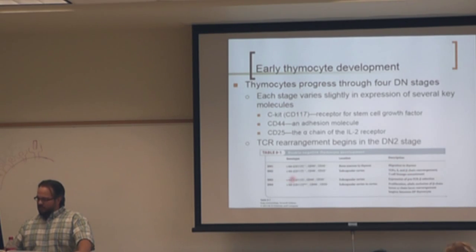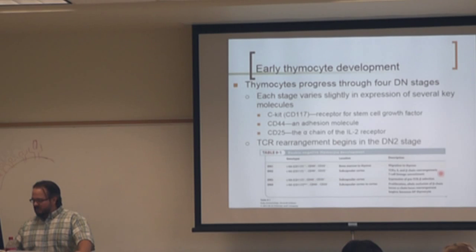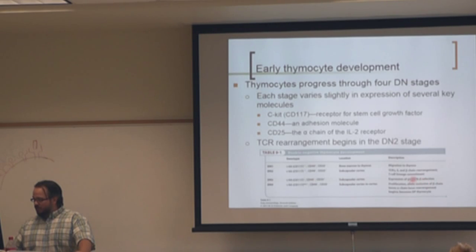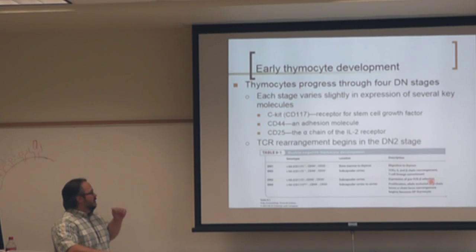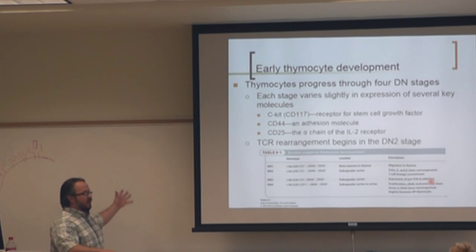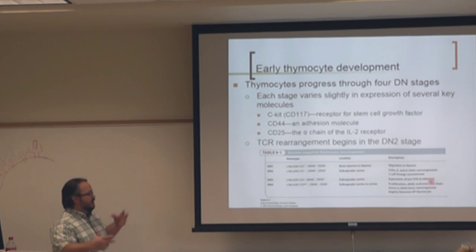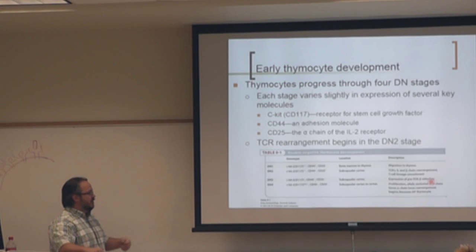We know there are multiple stages. Once they get into the double negative 2 stage, they become committed — they are now decidedly going to become T cells. In double negative 3, you get expression of a pre-T cell receptor alpha, so we've got the beta chain. Similar to B cells, where you have your heavy chain and then a surrogate light chain, here we have our beta being expressed together with this surrogate invariant chain.